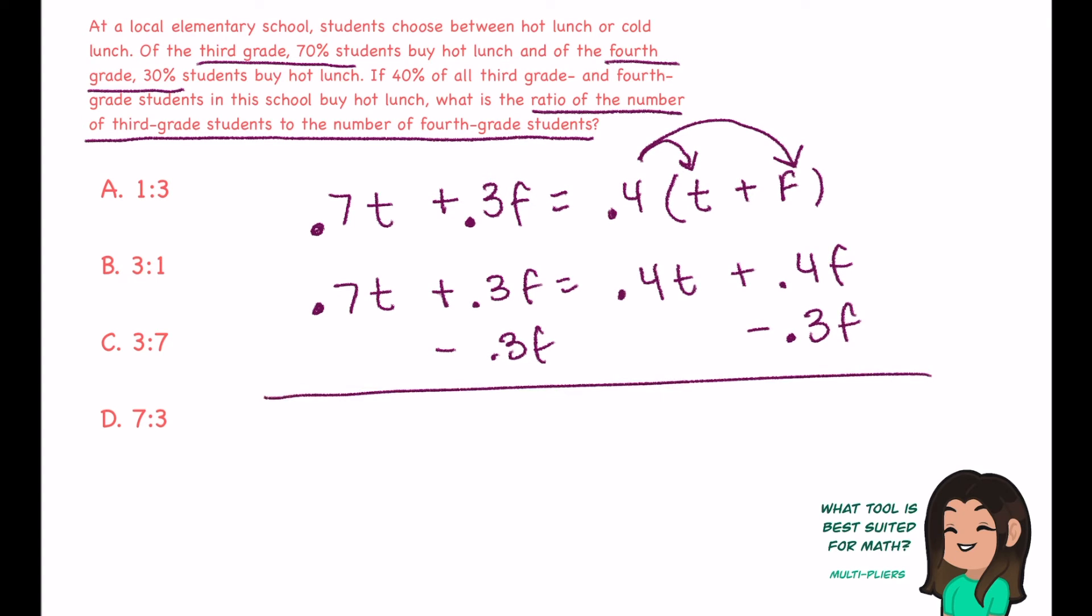I'm gonna move my 0.4 third graders from this side to the right side by subtraction. Whatever I do on one side, I have to do on the other. I can also move my fourth graders to the other side by subtraction. Whatever I do on one side, I have to do to the other. Cancels out.